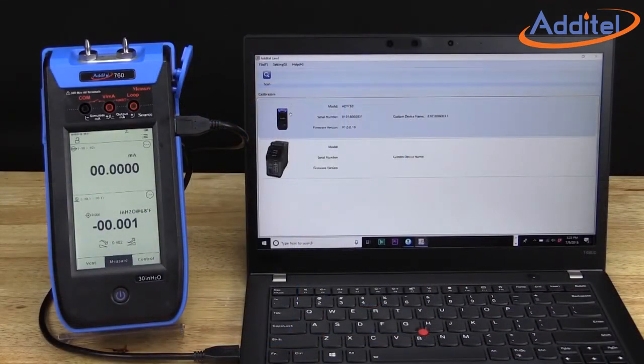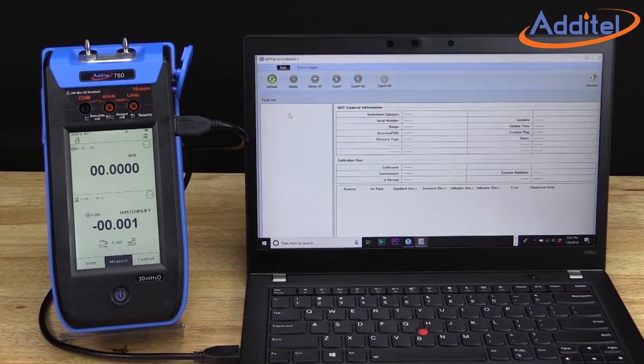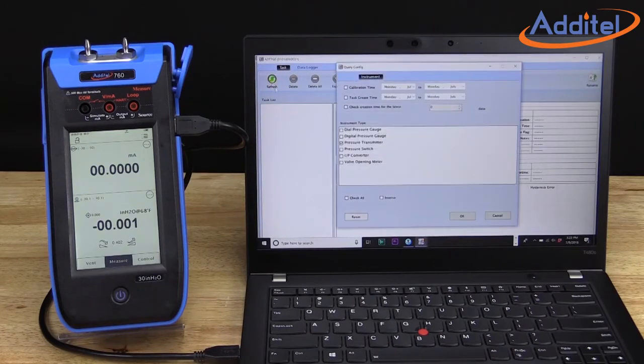With USB, Wi-Fi, and Bluetooth, the ADT760 is ready to collect and deliver data where you need it, when you need it.